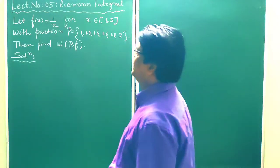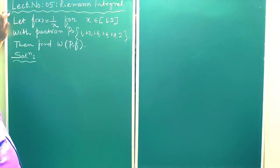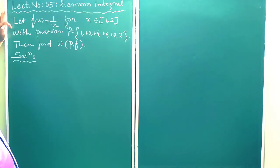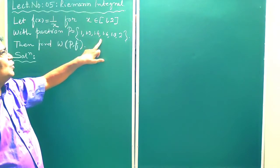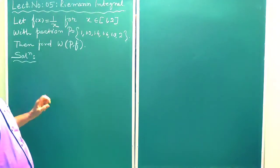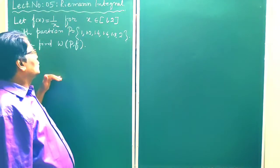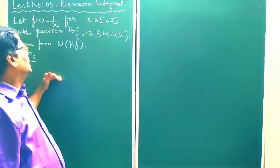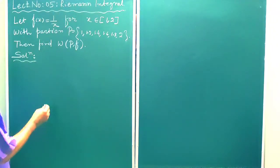Let us solve a problem using Riemann integral. Let f(x) = 1/x for x belonging to the closed interval [1, 2] with partition P = {1, 1.2, 1.4, 1.6, 1.8, 2}. We have to find ω(P, f), the oscillatory sum of the partition P with respect to the function f.